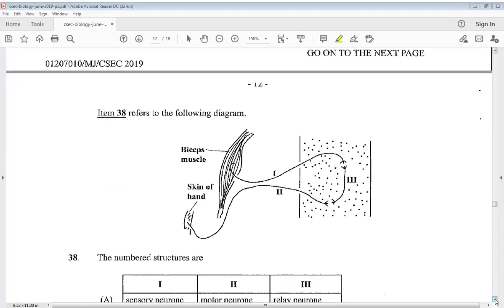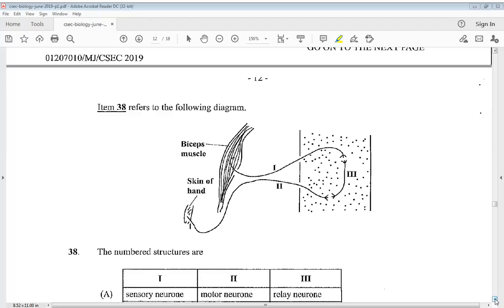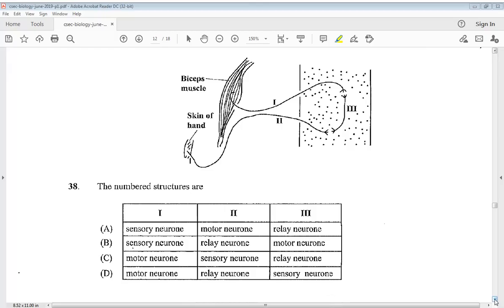Item 38 refers to the following diagram. Here it says the numbered structures are - so we have four numbered structures there. So we have one, the sensory neuron. Two, we have the relay neuron. And three, we have the motor neuron. So B would be your answer.